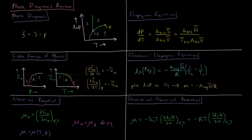For the various phases, the phase which exists is the one with the lowest Gibbs energy. The molar Gibbs energy of a phase changes with respect to pressure based on its molar volume, and changes with respect to temperature based on its negative molar entropy. Based on the values of molar volume and molar entropy for each phase, increasing pressure goes from gas to liquid to solid, and increasing temperature goes from solid to liquid to gas.